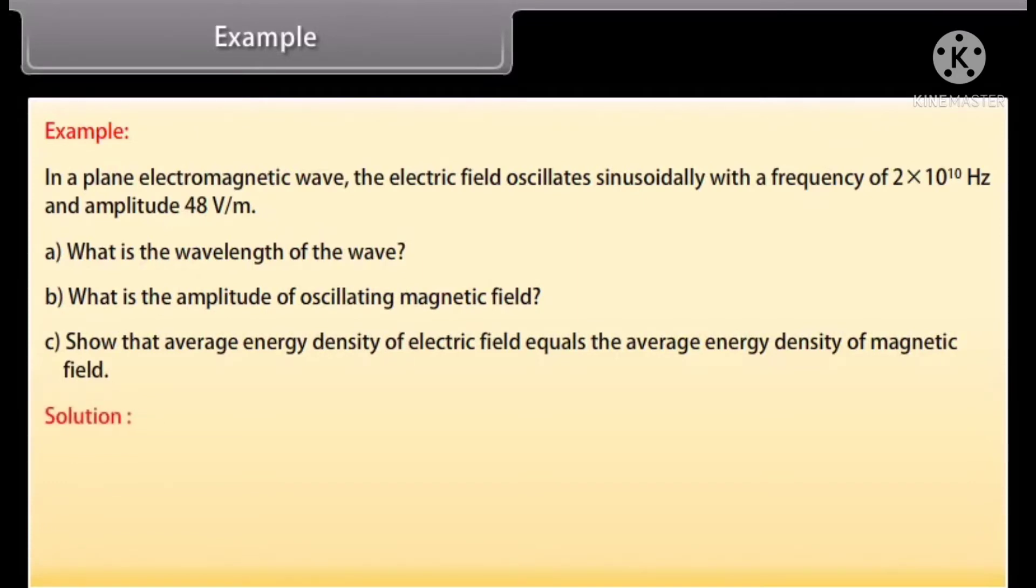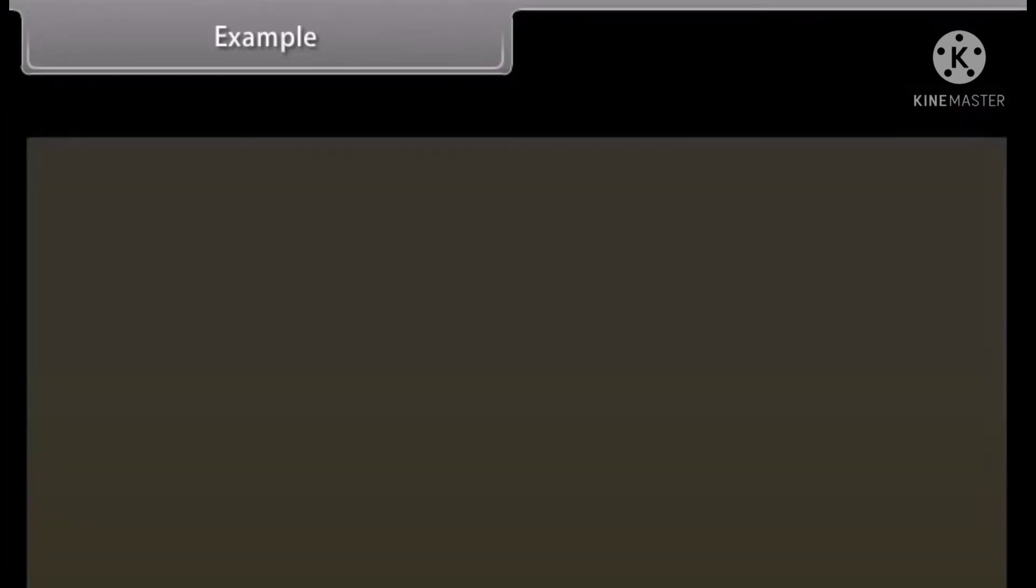Let's see the solution. Given values are nu which is equal to 2 into 10 raised to the power 10 hertz. E_0 equals 48 volt per meter. We know that lambda is equal to C upon nu. By putting and calculating the values, we get wavelength of the wave which is equal to 1.5 into 10 raised to the power minus 2 meter. We know that B_0 is equal to E_0 upon C. By putting and calculating the values, we get amplitude of the magnetic field which is equal to 1.6 into 10 raised to the power minus 7 tesla.